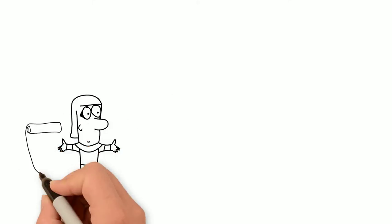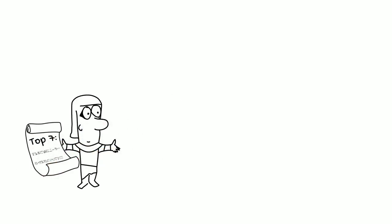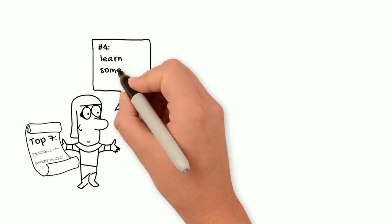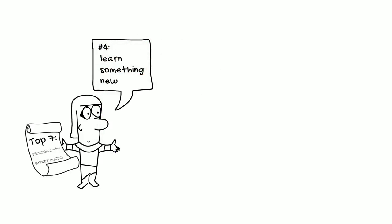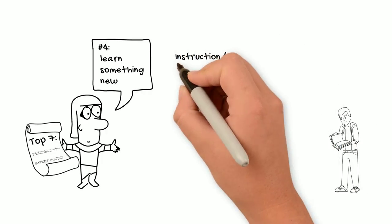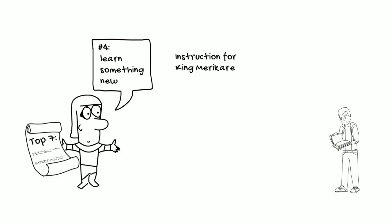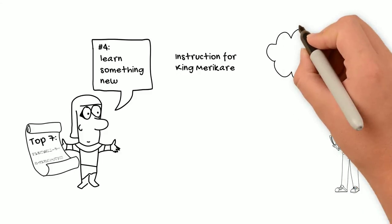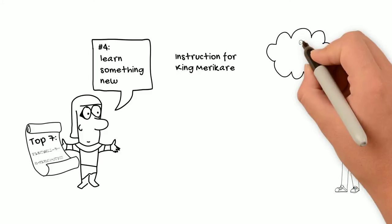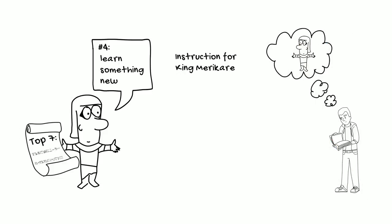Our fourth resolution is to learn something new or otherwise educate yourself this year. Egyptian wisdom texts often advise the reader to read more and study harder. The Middle Kingdom wisdom text called The Instruction for King Merikare counsels: Copy your fathers, your ancestors. See, their words endure in books. Open, read them, copy their knowledge. He who is taught becomes skilled.